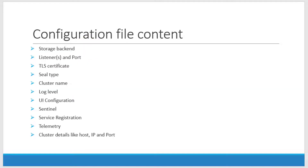The configuration file will have information like the storage backend, what port it is going to listen to, whether it is going to use any TLS certificate and where it is located, what type of seal to use, the cluster name, log level, what information and where it should get logged, the configuration for the UI, sentinel, service registration, telemetry on what information and where it should get stored, and other details about the cluster.